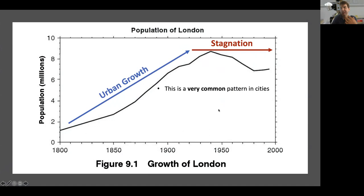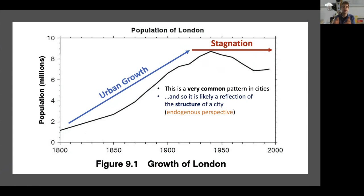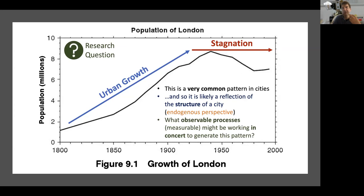Now we have a better idea of where this common pattern comes from. Initially there was a question of whether we could build models that have similar patterns and then use those models to learn more about the internal elements of city dynamics. Because we see this pattern so often, it's not like every city suffers the same external event — cities with a wide variety of external environments show this upward growth and stagnation, which implies there's something internal to the city.